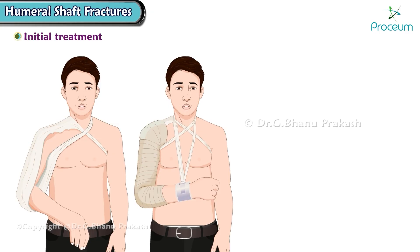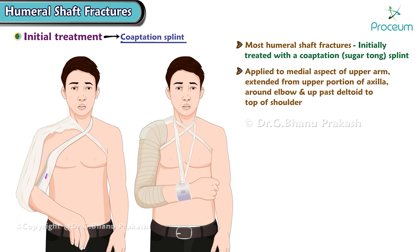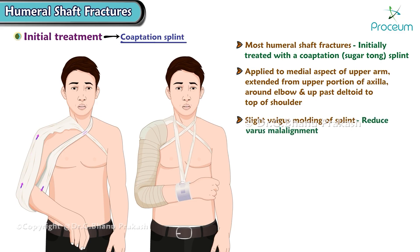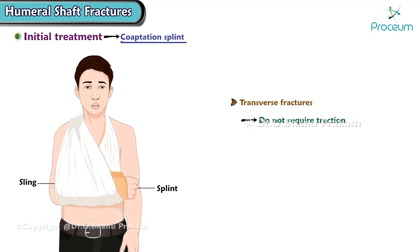Most humeral shaft fractures can be initially treated with a coaptation sugar-tong splint. The splint is applied to the medial aspect of the upper arm, extended from the upper portion of the axilla, around the elbow, and up past the deltoid to the top of the shoulder. Slight valgus molding can help reduce varus malalignment, and ensuring the splint extends deep into the axilla proximal to the fracture site also aids in minimizing varus angulation. Transverse fractures can be initially managed with the splint and a standard sling.